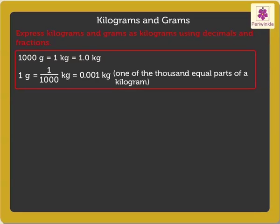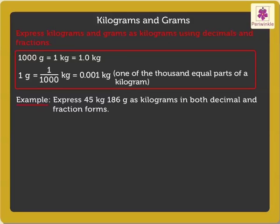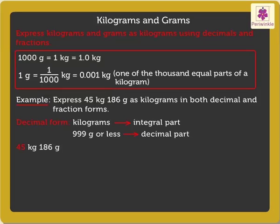Let's understand it better with an example. Express 45 kilograms and 186 grams as kilograms in both decimal and fraction forms. Firstly, let us express it in decimal form. Kilograms form the integral part and grams which are 999 or less form the decimal part. Thus, 45 is the integral part and 186 is the decimal part. So, 45 kilograms and 186 grams is expressed as 45.186 kilograms in decimal form.